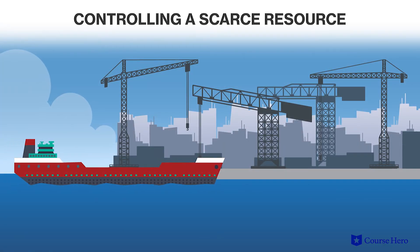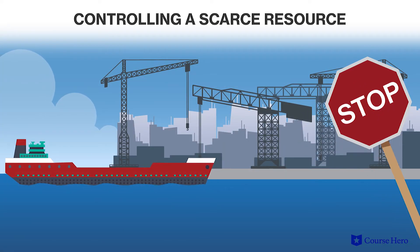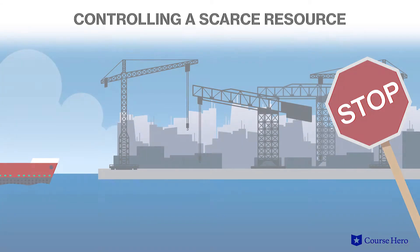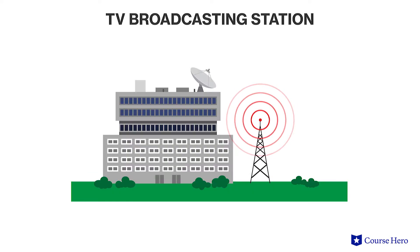When existing operators control a scarce resource — for example, if a small number of firms control all the docks at a seaport — it is difficult for newcomers to compete in the same location. Government regulations, like the need for a broadcasting license to set up a television broadcasting station, may limit the number of opportunities for potential entrants.